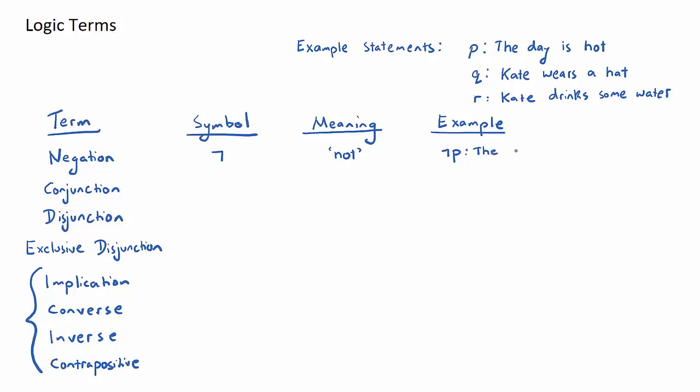Next one, conjunction. Symbol like a hat, it means and. So for example, q conjunction r. If our q statement is Kate wears a hat and the r statement is Kate drinks some water, it would be Kate wears a hat and drinks some water. Simple as that.